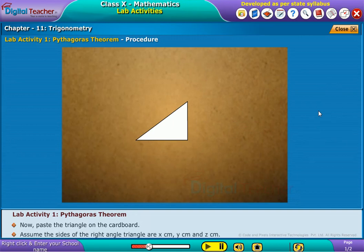Assume the sides of the right angle triangle are X centimeters, Y centimeters and Z centimeters.